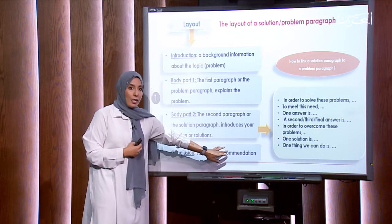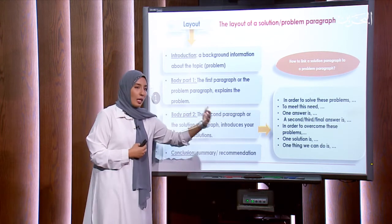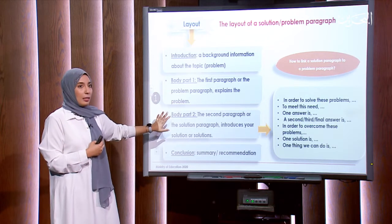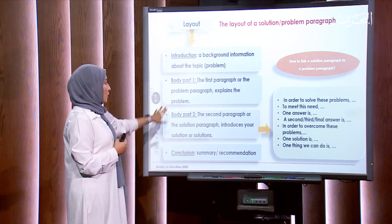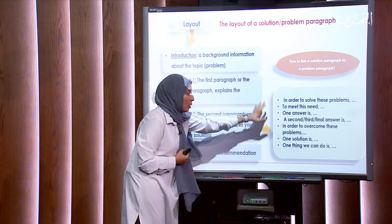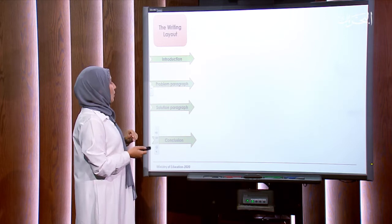In the end, there is a summary and recommendations. So the structure is: introduction — a background of the problem; if it's real life, state when it started, how it started, why it is a problem to you; then the body — what is the problem, the solutions from your research; and in the end, a summary of the entire thing with recommendations. In the body, to address the problems you typically write 'first,' 'second,' 'third.' For solutions, you write 'one answer is,' 'a second answer is,' 'in order to overcome these problems, one solution is,' or 'one thing we can do is.'